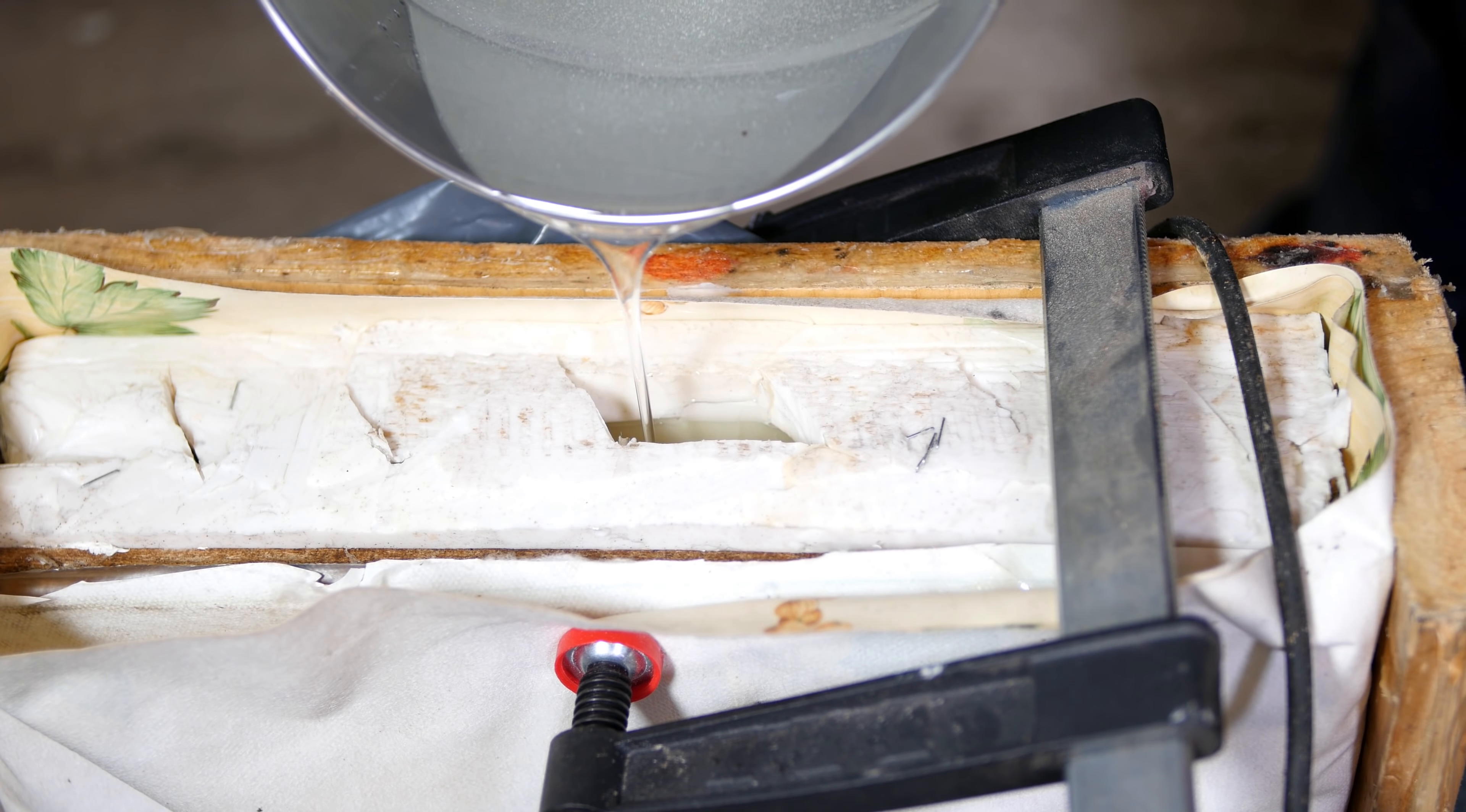After the mold is finished, we can proceed with the front and the back of the guitar. This is where the ultraviolet powder comes into play.